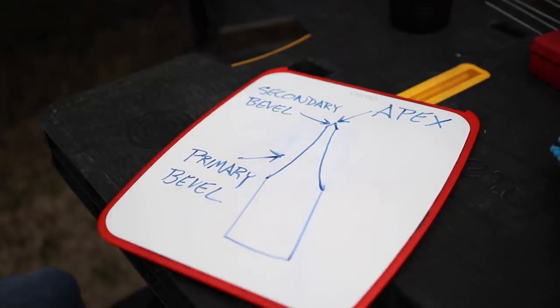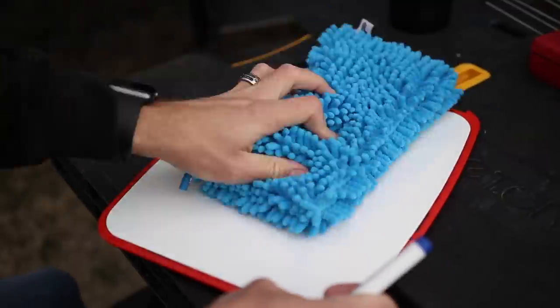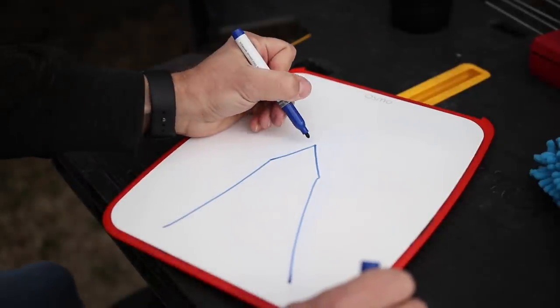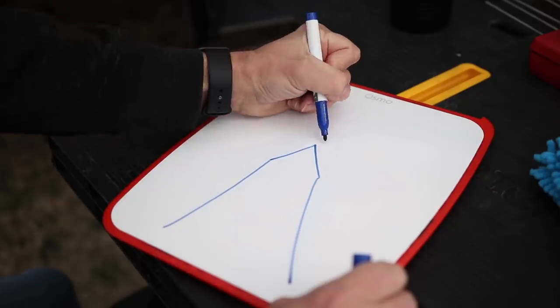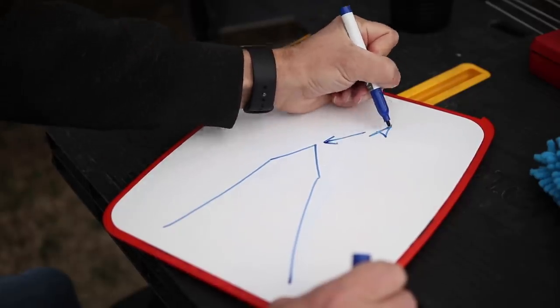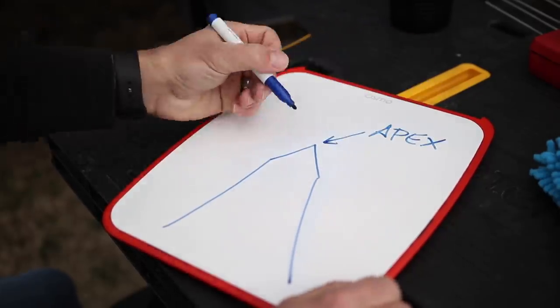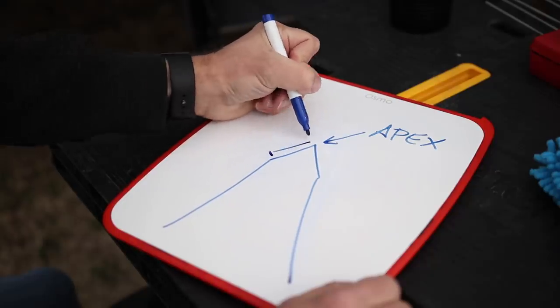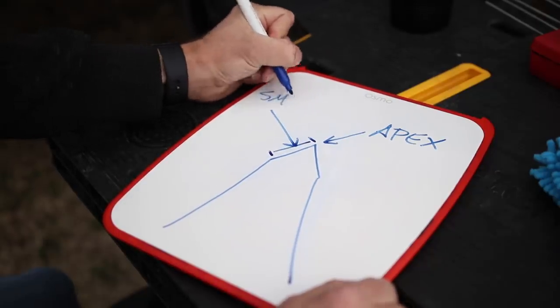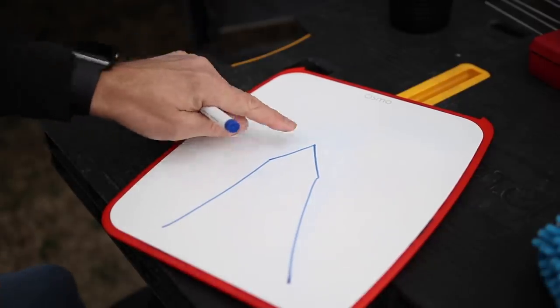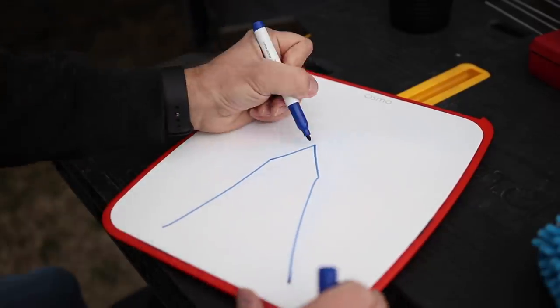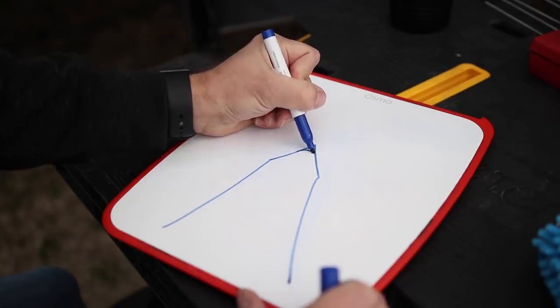And the very tip top of that bevel is what's called the apex. So let's zoom in on that secondary bevel. Now the key to maintaining a wicked sharp blade is to make this apex stand as tall as possible.